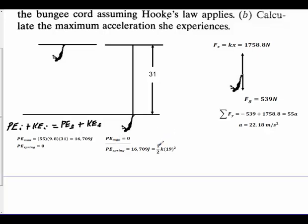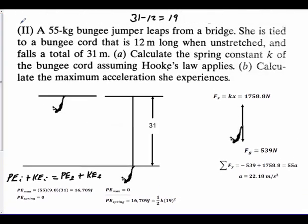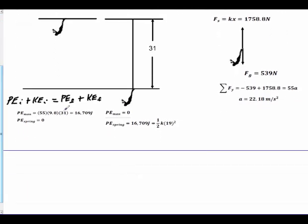We set that equal to one-half times k times the deflection. Remember, the deflection is 19 because we said if she falls 31, I have a 12 meter long unstretched cord, then it has to stretch 19. I apply the 19 here.